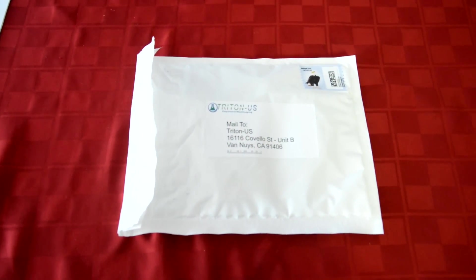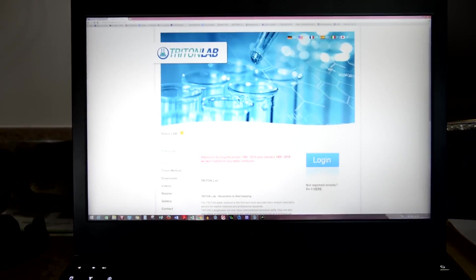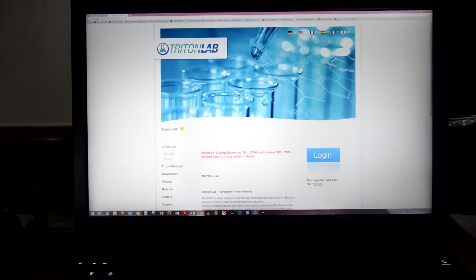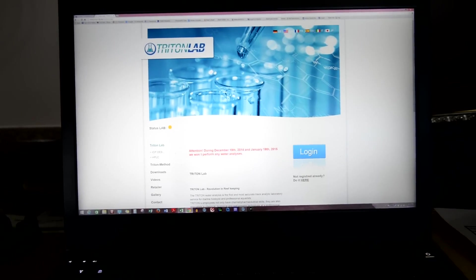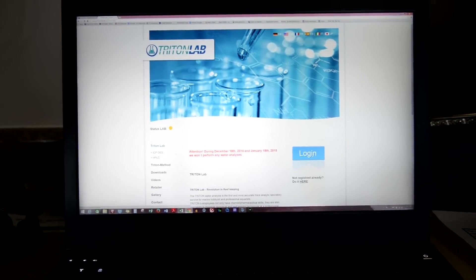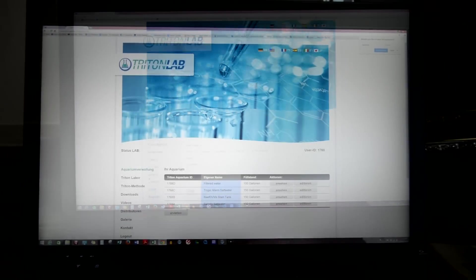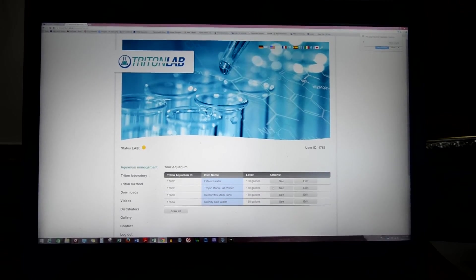I'm going to show you here the computer. You go to their website which is Triton Lab. You log in or register if you haven't come here before. Let's see if I can get myself logged in here. Once you get logged in you basically can set up any number of tanks that you want. You're given basically a Triton Aquarium ID. That ID is what you're going to put on your vials when you send them in.